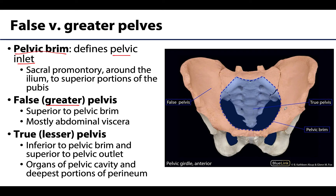The true or lesser pelvis is located between the pelvic inlet and the pelvic outlet. It extends between the tip of the coccyx toward the ischial tuberosities, which are not easily viewable here because they are so posteriorly placed, and the pubic arch anteriorly.